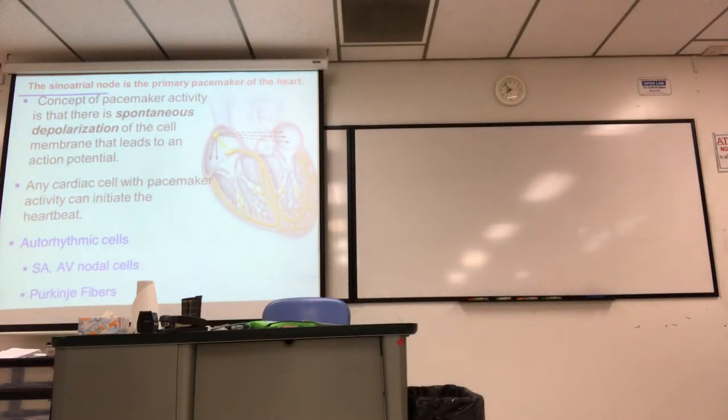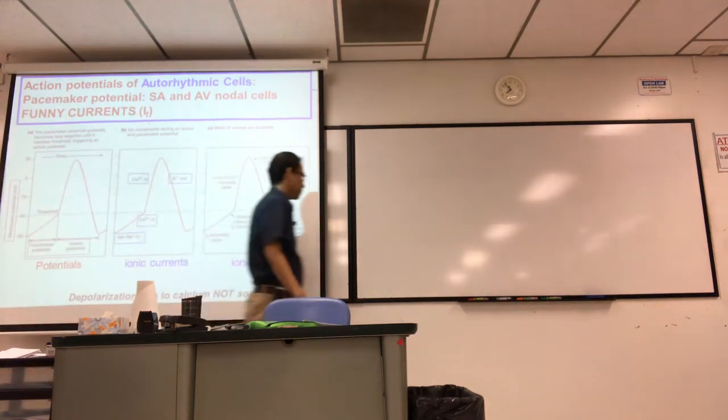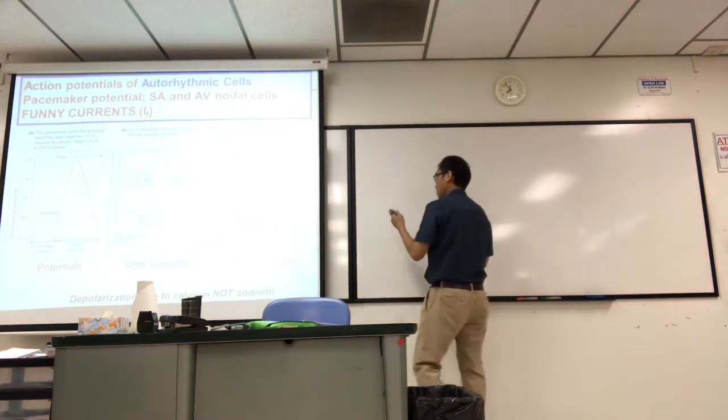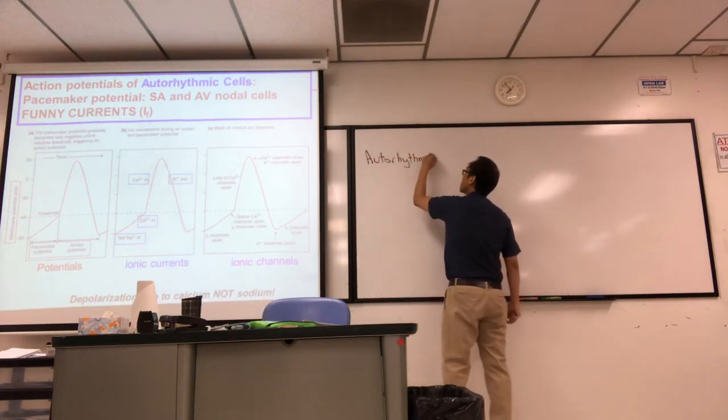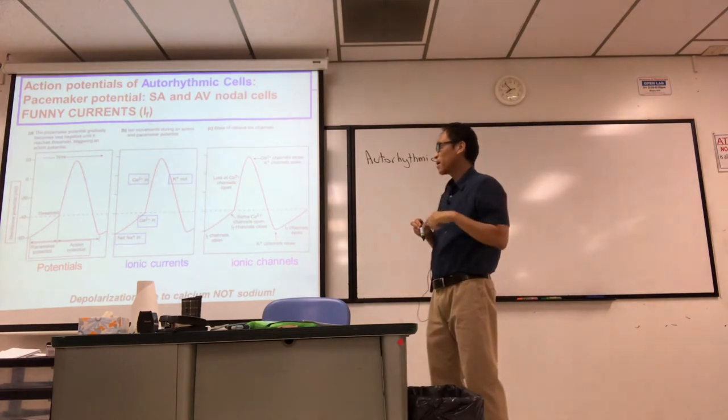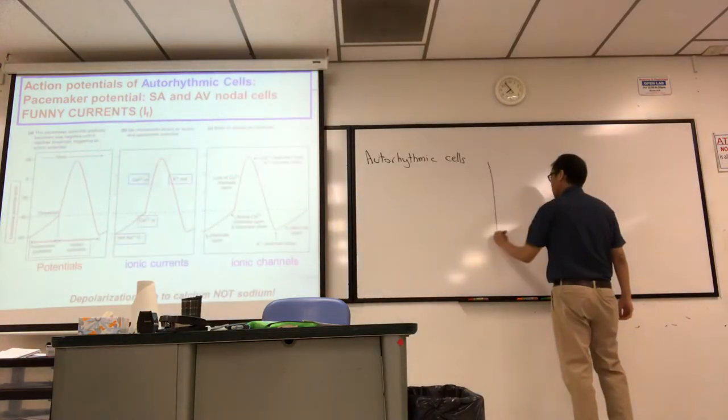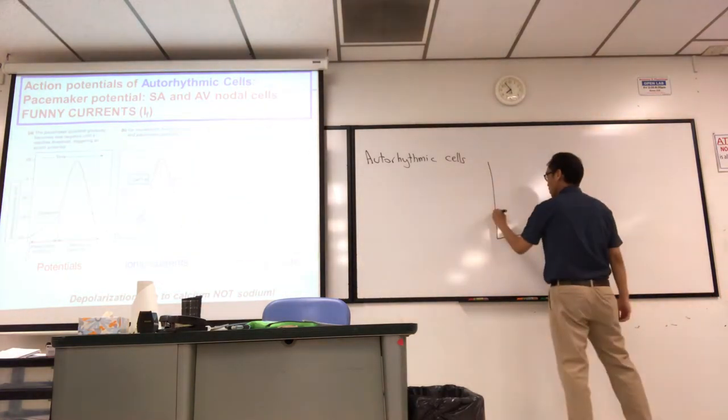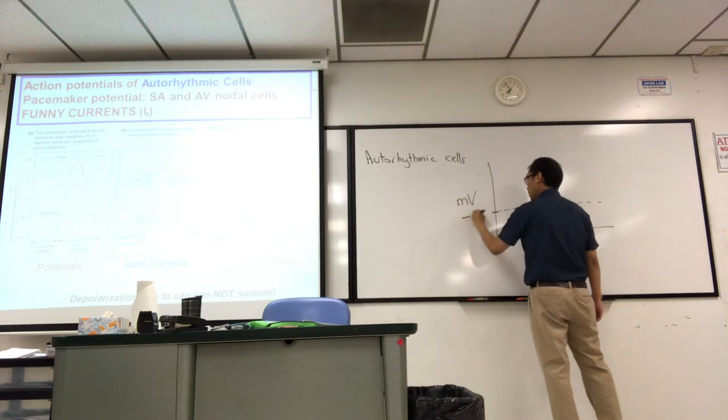Autorhythmic cells have the pacemaker potential, and let me start the study. In three frames, this shows you everything you need to know about the action potential of the autorhythmic cells. A little review: they set the threshold potential at maybe negative 40 millivolts.